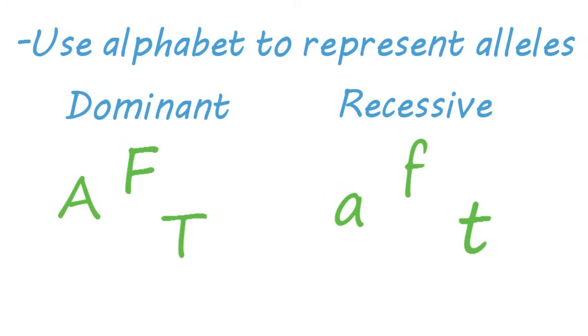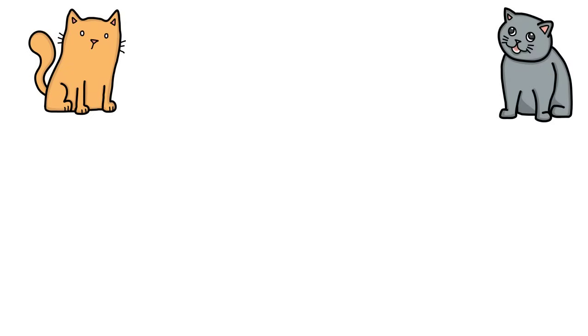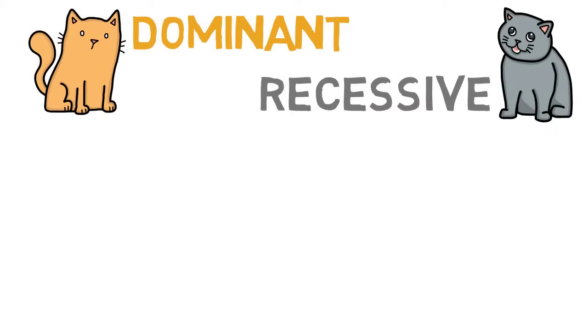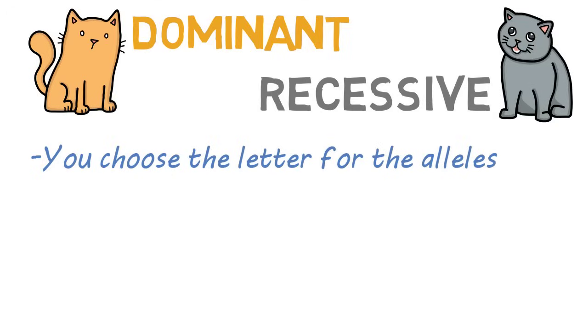Let's look at an example. Let's say cat fur color can be orange or gray, orange being dominant and gray being recessive. The first thing we want to do is select a letter to represent the alleles. The letter you choose is not important, so long as you can distinguish between the uppercase and the lowercase form of that letter.